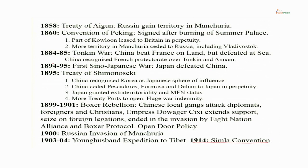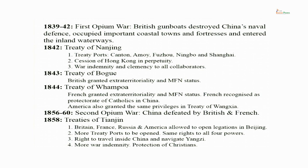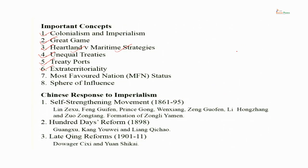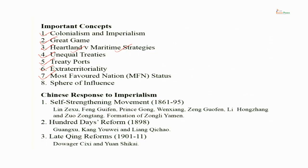Treaty ports are those ports given to foreign powers by China where foreigners could come and do business. In these treaty ports there was extraterritoriality — for example, a British subject living in China would not be governed by Chinese laws but by British law, judged by British judges. The Chinese government could not prosecute them. The same applied for French, Russians, and Americans. The first five treaty ports were Canton, Amoy, Fuzhou, Ningbo, and Shanghai, given to the British. Most favored nation status meant that no other country would be given a better trade deal — these days it is applicable in the WTO.